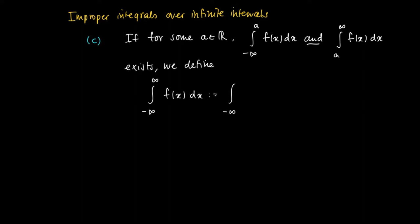We just sum up over those two parts: the integral from minus infinity to a of f(x) dx and the integral from a to infinity of f(x) dx. To illustrate what's happening here, consider the example of the function f(x) equals x times e to the power minus x squared.